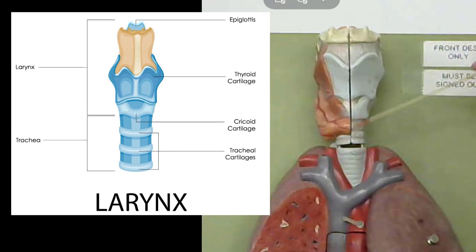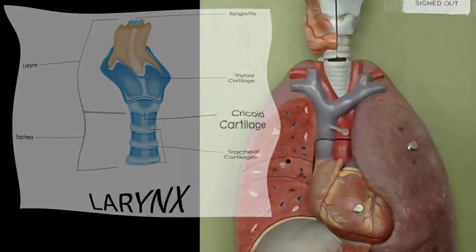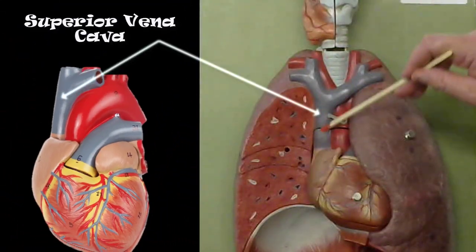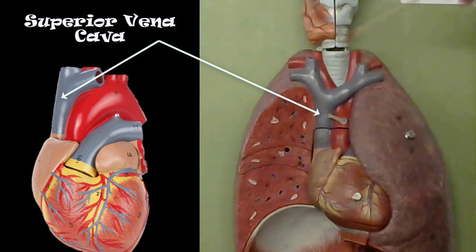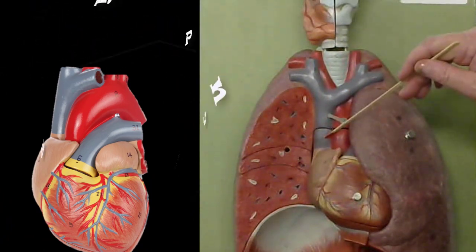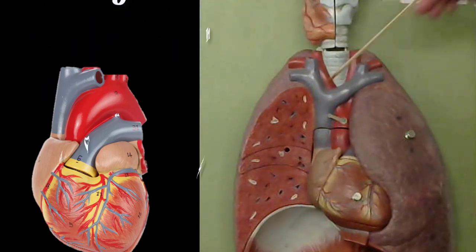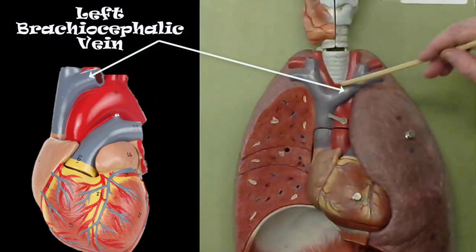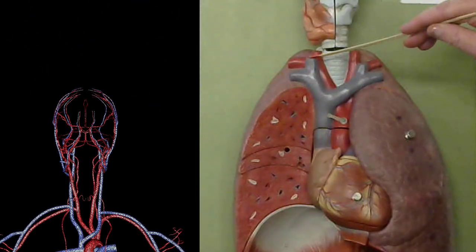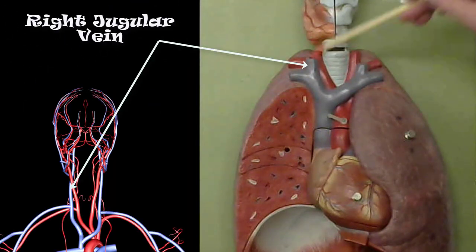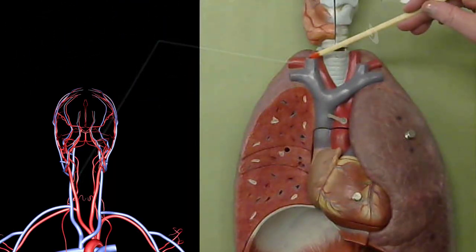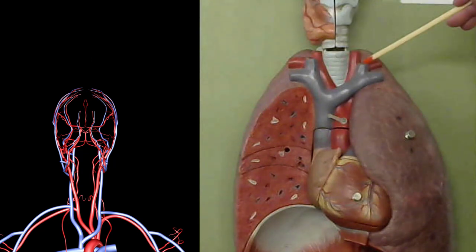And of course we have the superior vena cava. This is the right brachiocephalic vein and the left brachiocephalic vein. This is the right jugular vein and the left jugular vein.